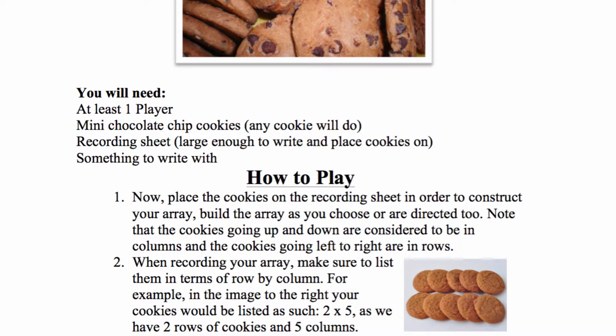While recording your array, make sure to list them in terms of row by column. For instance, in the image to the right, notice that we have two rows of cookies in five columns. As such, we would list them as two by five.